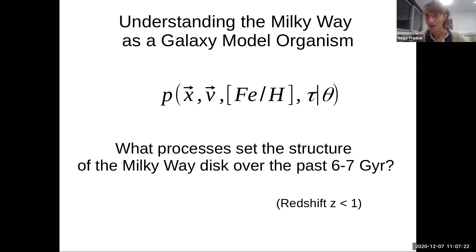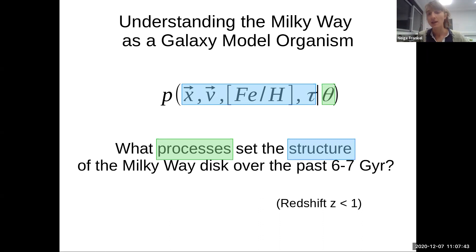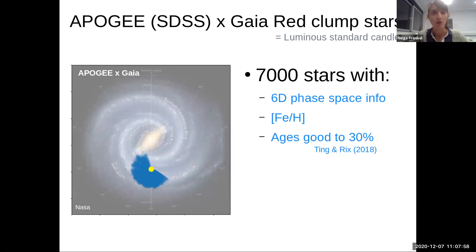This puts us in a position to ask what processes set the structure of the Milky Way disk over the past six or seven gigayears. I'm going to show you a global scenario of how the Milky Way disk could have formed and evolved, parameterize it, and fit for the model parameters to interpret them. The structure is going to be encoded in the data. We'll stay well below redshift 1 because the assumptions we're going to make along the way will break well before then.